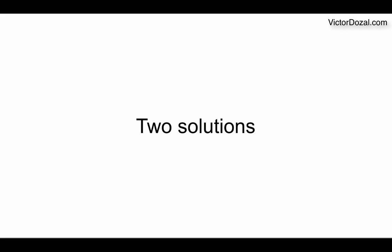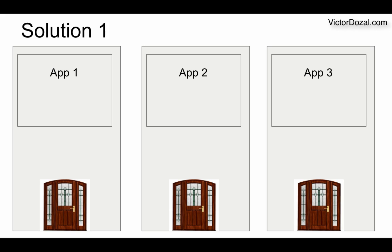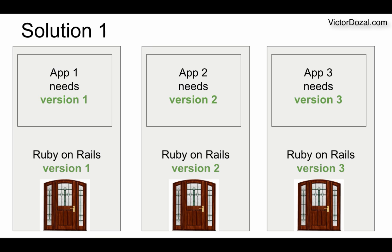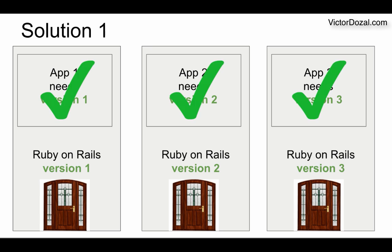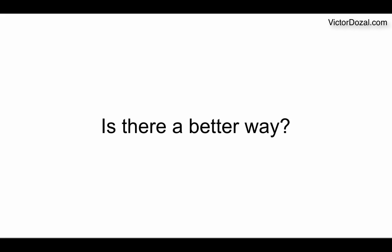I can come up with two solutions. The first solution is to have a different computer for each different application. This would help us install the correct Ruby on Rails framework for each computer, and every application would be working again. But that would be very expensive — and that is exactly what virtual machines do. They replicate everything over and over again. Is there a better way?